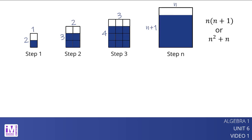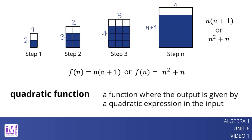The relationship between the step number and the number of squares can be described by a quadratic function f whose input is n and whose output is the number of squares at step n. We can define f with f(n) = n(n + 1) or f(n) = n² + n. A quadratic function is a function where the output is given by a quadratic expression in the input.